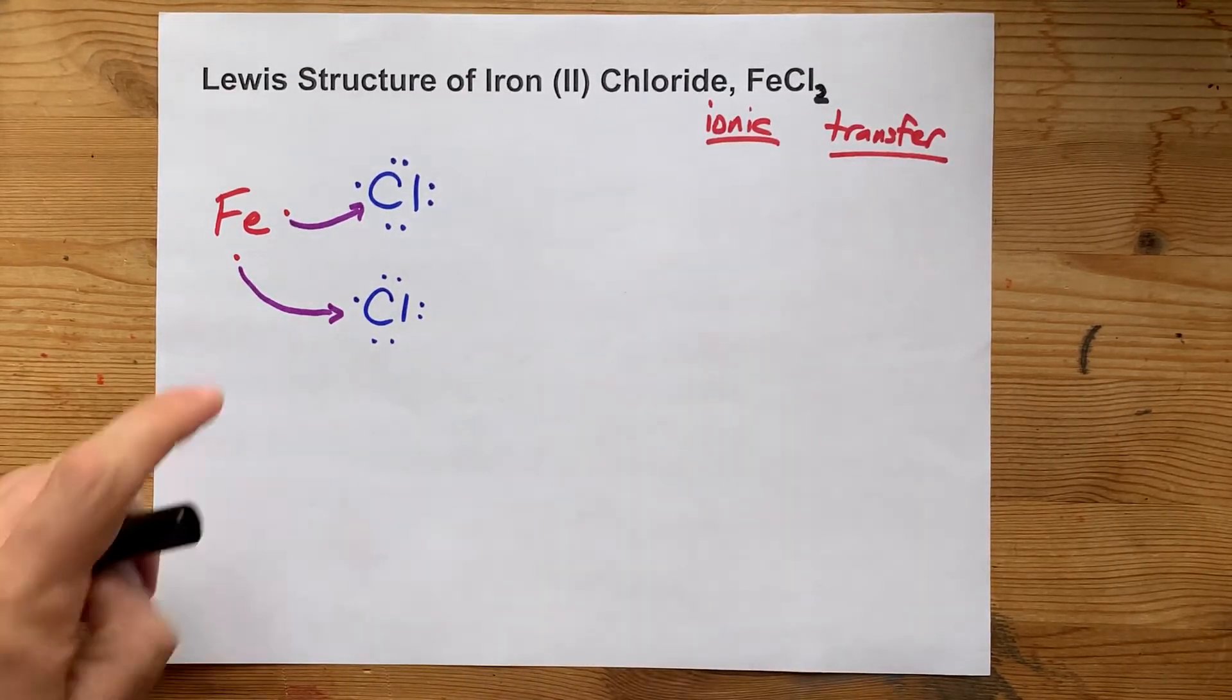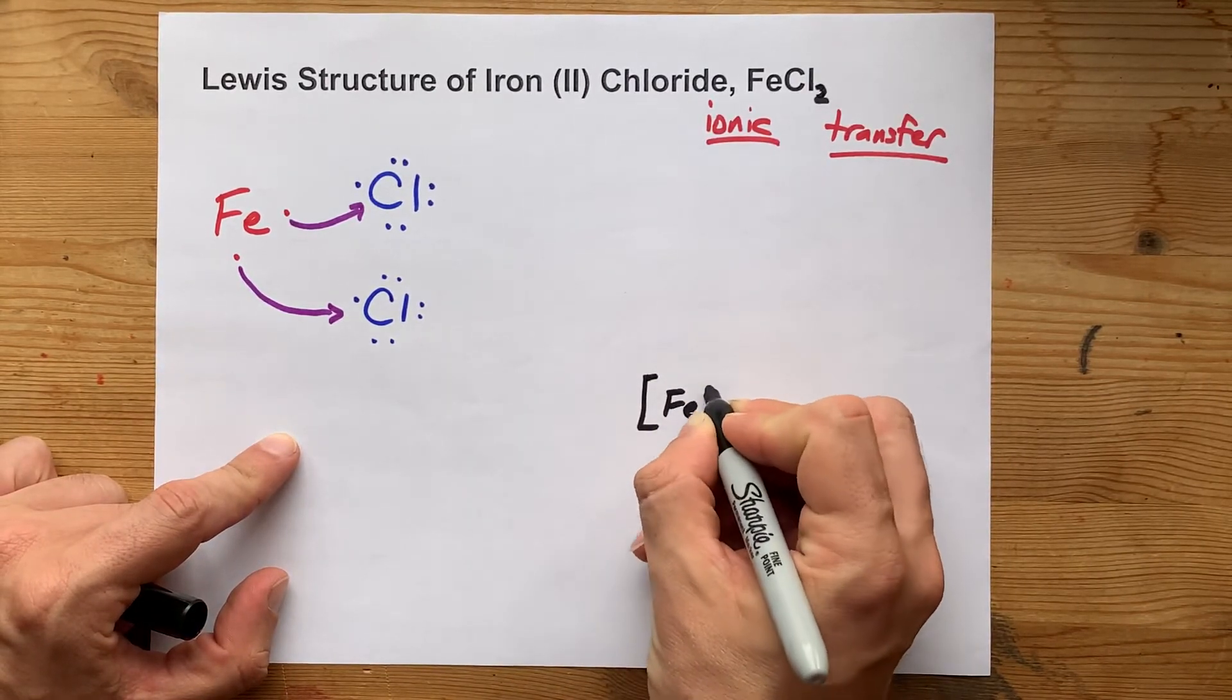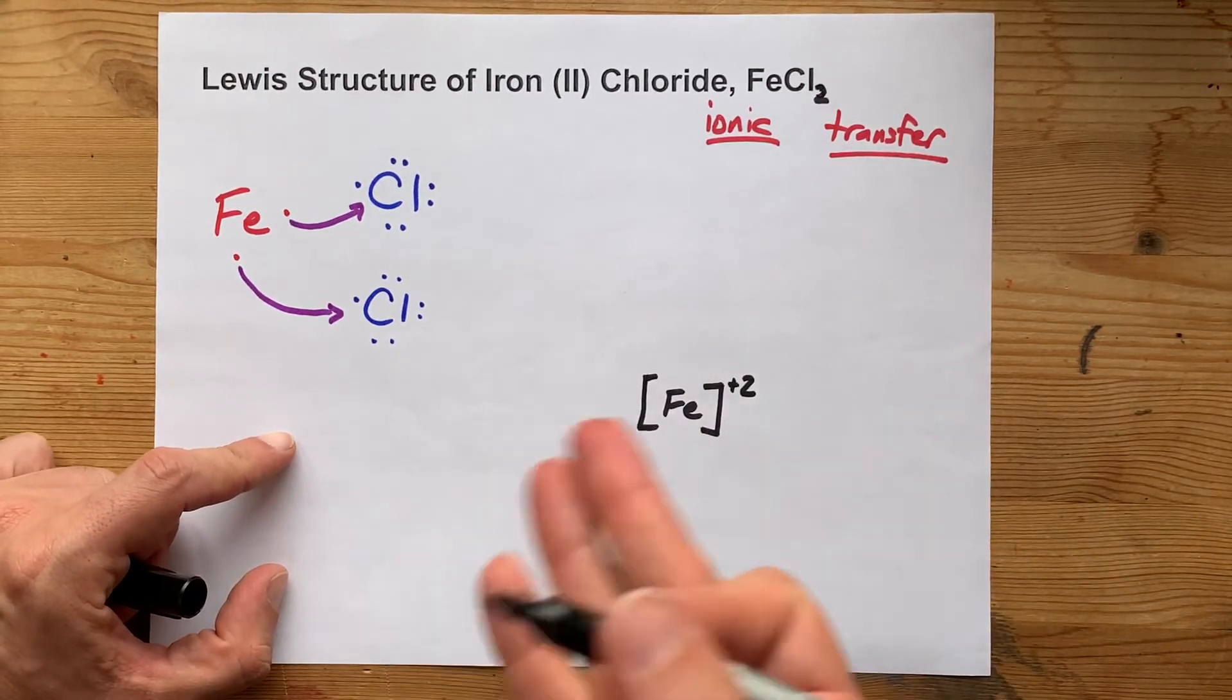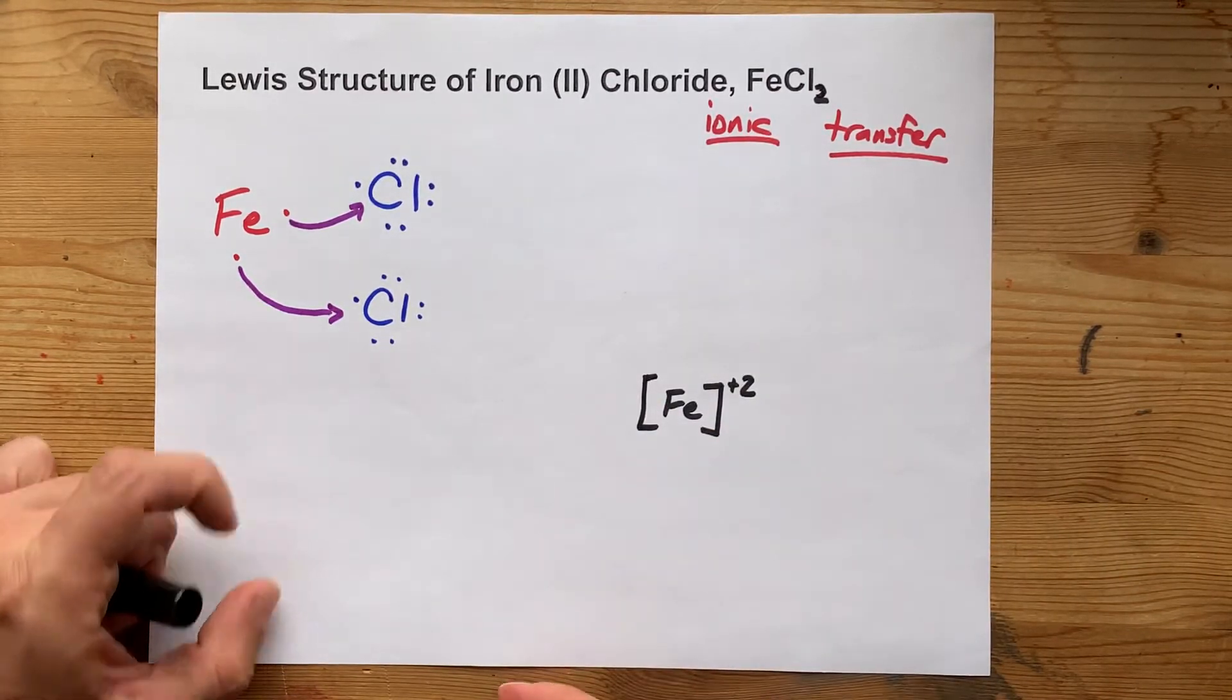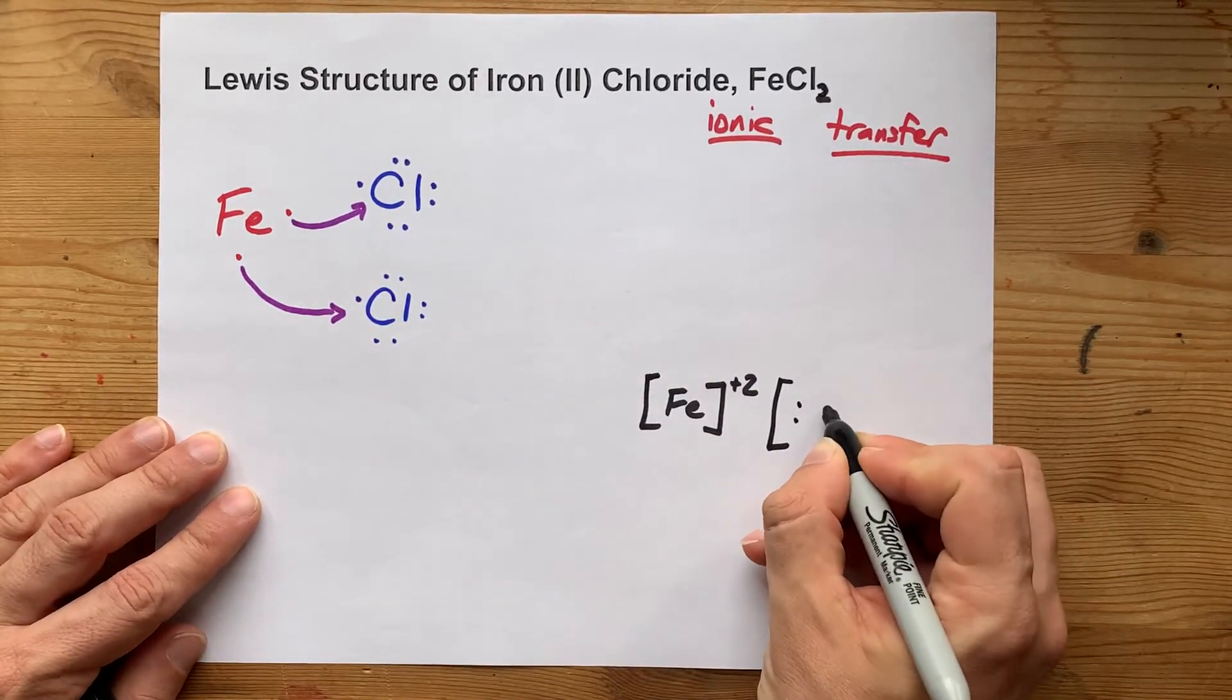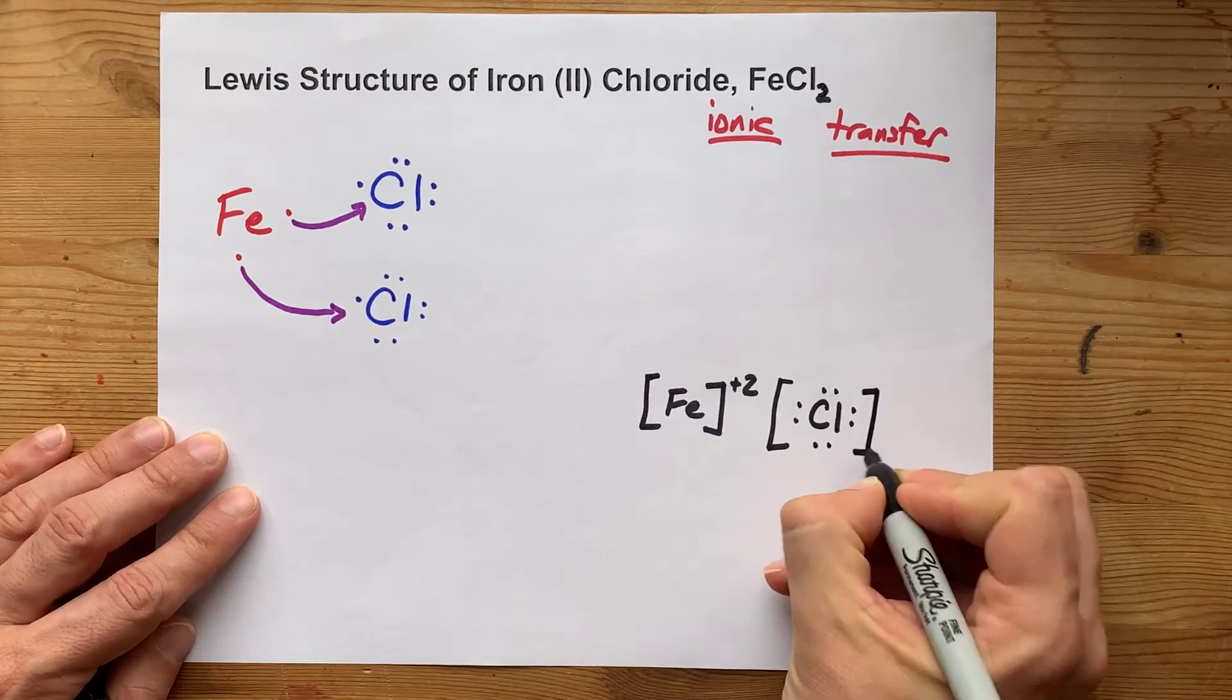The completed Lewis structure here will show the Fe atom without its two electrons and a corresponding positive 2 charge, because it lost two negative charges. And two chlorine atoms with an extra electron each. That actually makes them chloride ions.